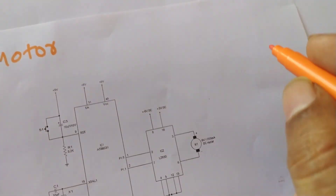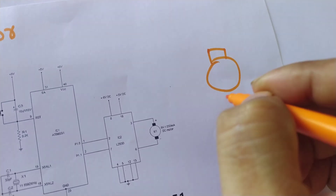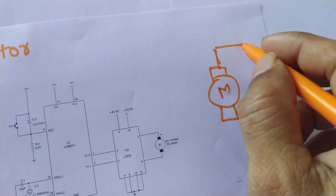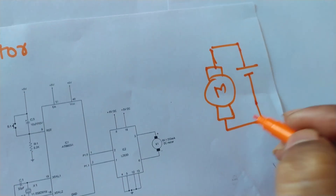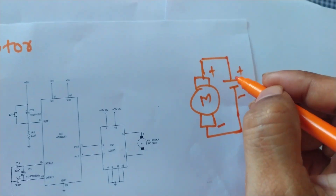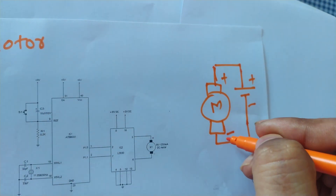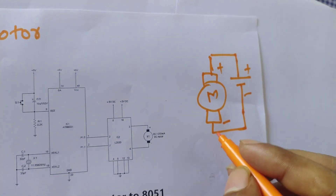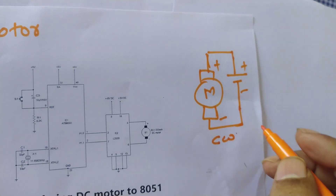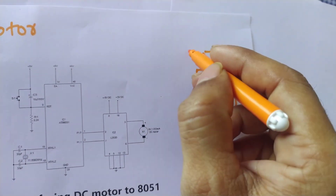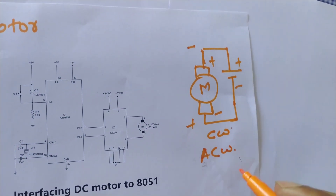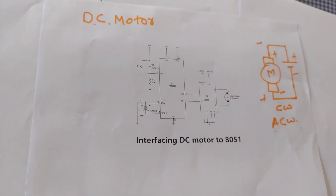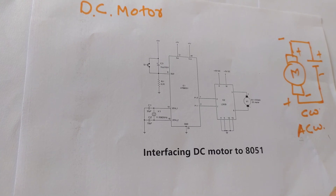A DC motor can be drawn with its symbol showing positive and negative terminals. When we apply positive to the motor's positive terminal and negative to the motor's negative terminal, the motor moves in the clockwise direction. If we apply reverse polarity — negative and positive — it moves in the anti-clockwise direction. In this way, the motor can be moved in both directions as per the power supply polarity applied.